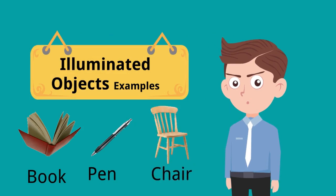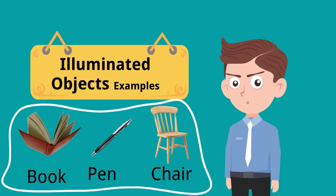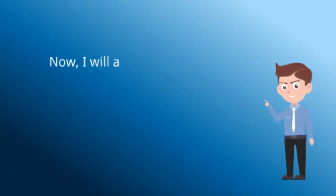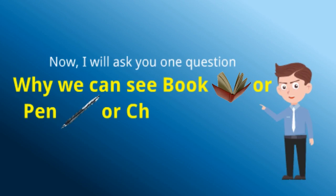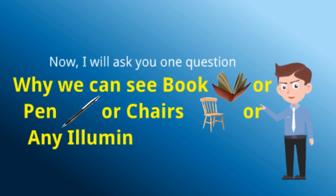Examples of illuminated objects are books, pins, chairs, stones — anything which cannot give or produce light but is only able to reflect light. These are known as illuminated objects. Now I will ask you a very simple question: why can we see books, pins, chairs, or any other illuminated objects, even though they are not producing light?